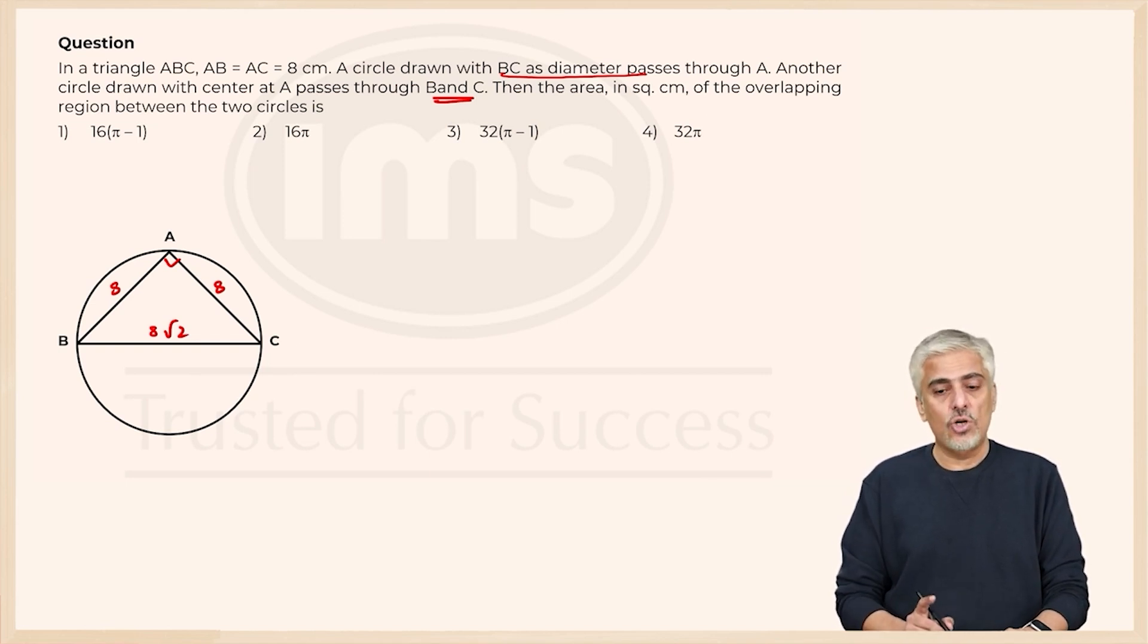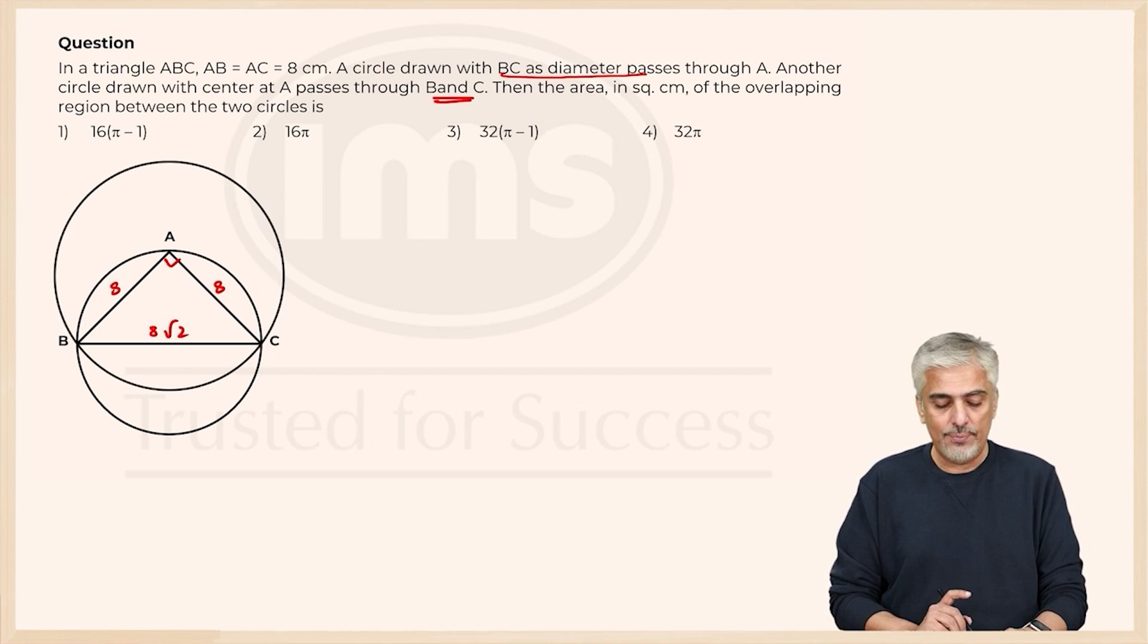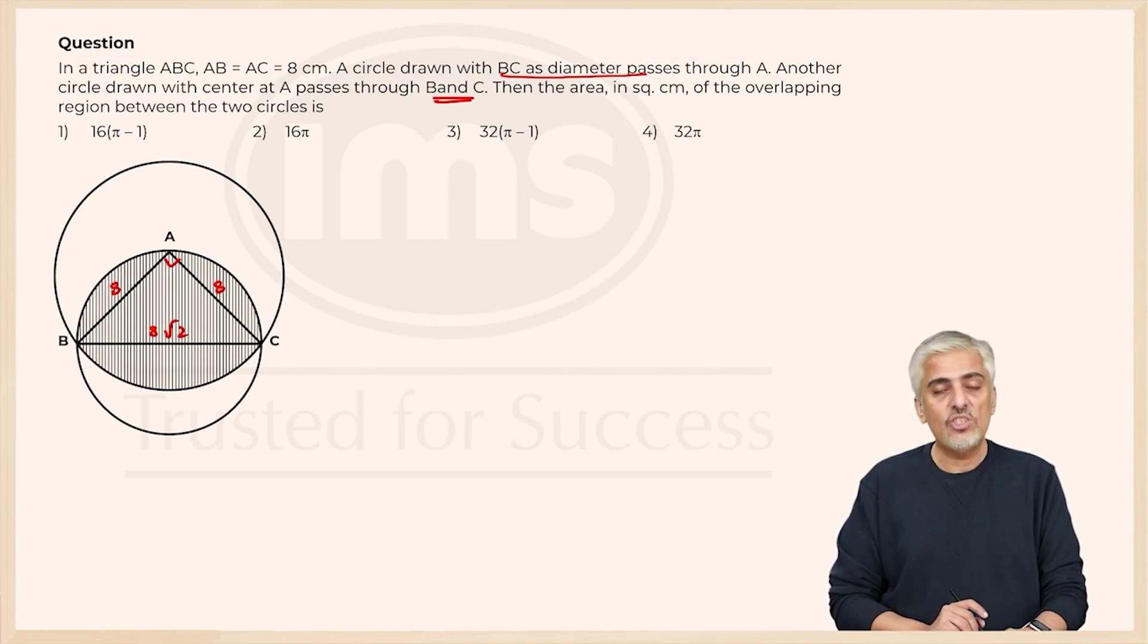Now there's one more circle drawn passing through B and C with A as a center. Now getting this circle right was very important. This is the second circle. We want to find the area which is overlapping between both the circles. So if you look very carefully, this will be the area overlapping between both the circles.